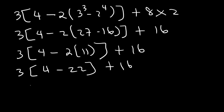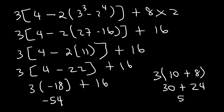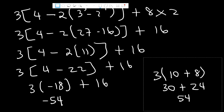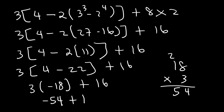Then we have 4 minus 22, which is negative 18, and 3 times negative 18 is negative 54. Another way to compute that: think of 18 as 10 plus 8. 3 times 10 is 30, and 3 times 8 is 24. 30 plus 24 is 54. So now we have negative 54 plus 16, which gives you negative 38. That's the answer for this expression.